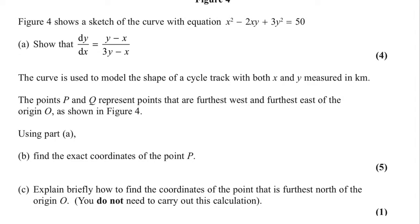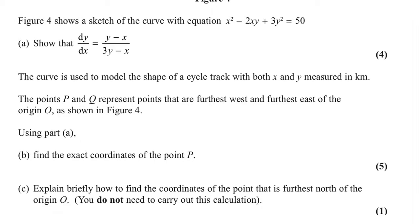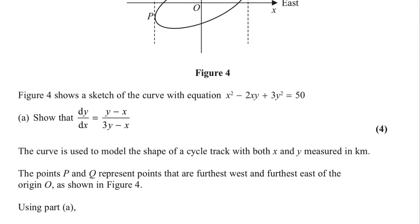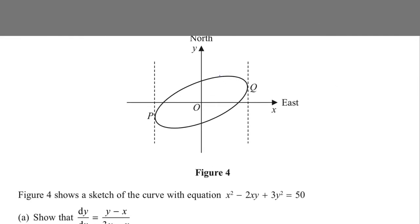Part c says explain briefly how to find the coordinates of the point that is furthest north of the origin. The point furthest north of the origin will be this point here. And if you look at what is happening there, the gradient's 0. So, that's the point furthest north, and the gradient will be equal to 0.